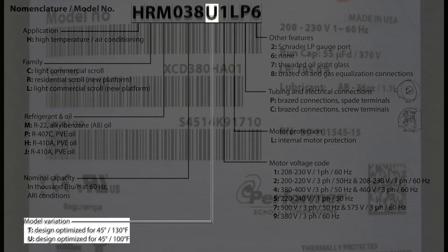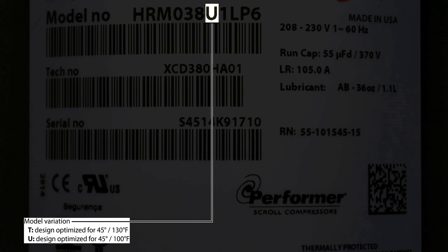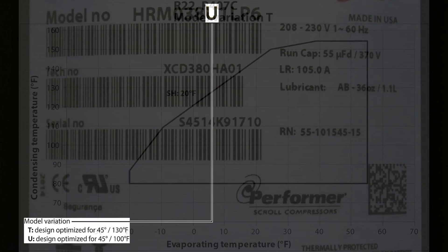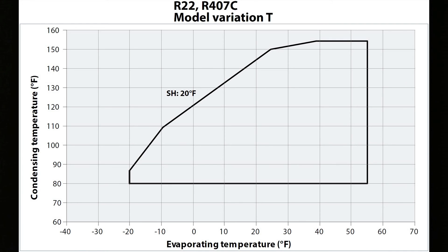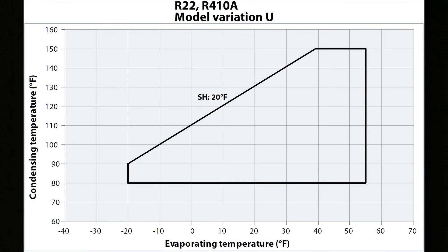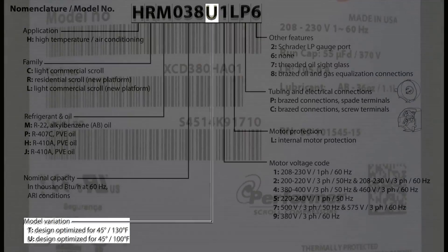The seventh digit signifies the model variation, which represents design conditions under which the performance of the compressor is optimized. Model variations with T are optimized with an evaporator temperature of 45 degrees Fahrenheit and a condensing temperature of 130 degrees Fahrenheit, while model variations with U are optimized with an evaporator temperature of 45 degrees Fahrenheit and a condensing temperature of 100 degrees Fahrenheit.